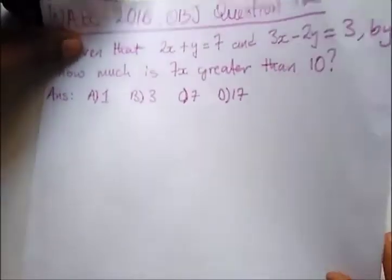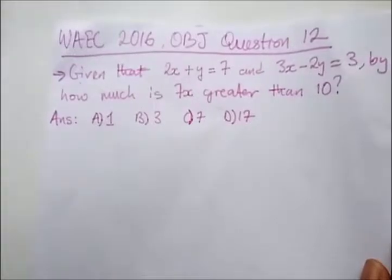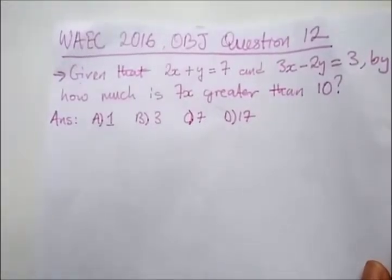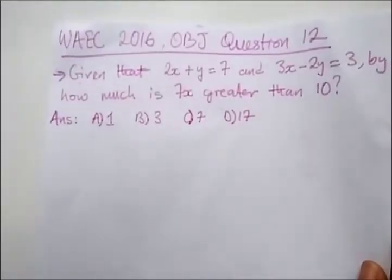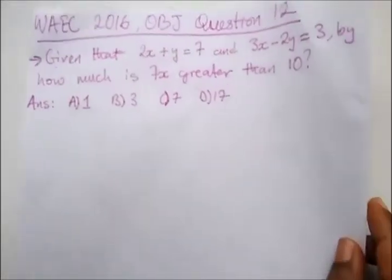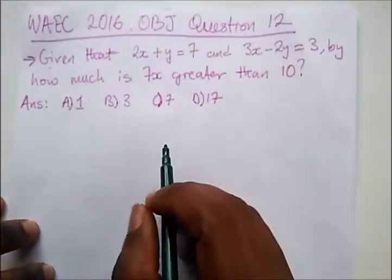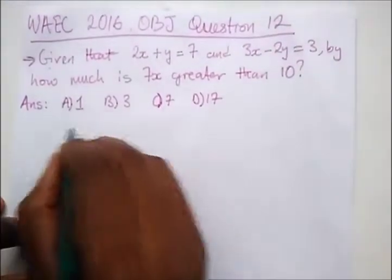Next question from WAEC 2016 OBJ question 12 says given that 2x plus y equals 7 and 3x minus 2y equals 3, by how much is 7x greater than 10? By how much is 7x greater than 10? So from here,